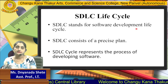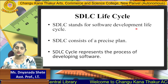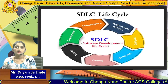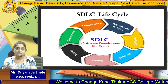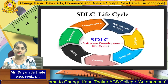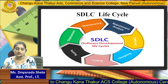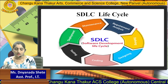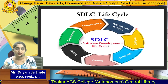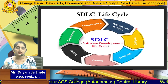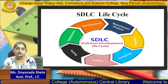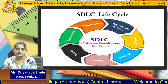In the SDLC life cycle there are 7 phases. The first phase is requirement analysis, then the designing phase, then coding, testing, deployment, and maintenance. These are the phases present in your SDLC life cycle.